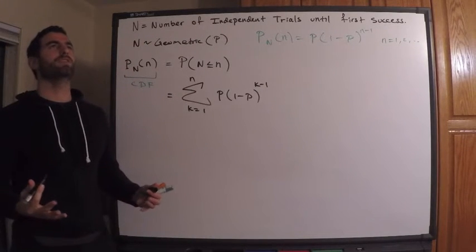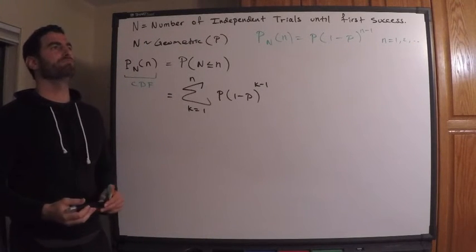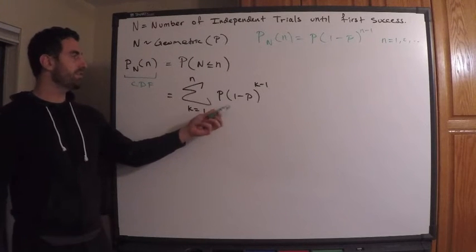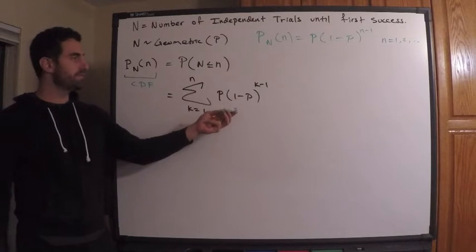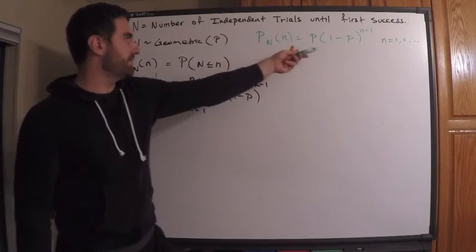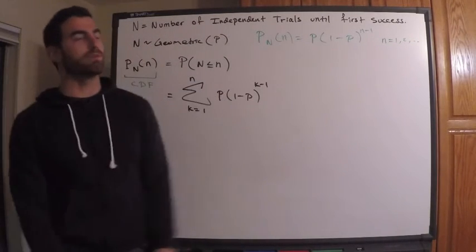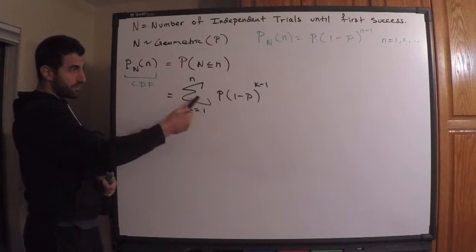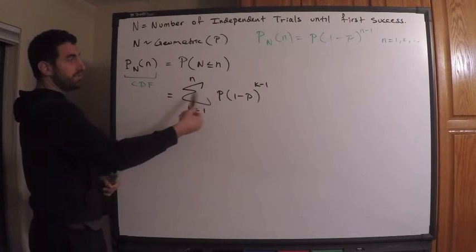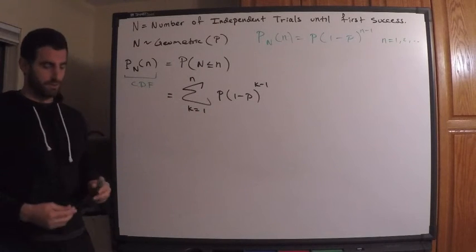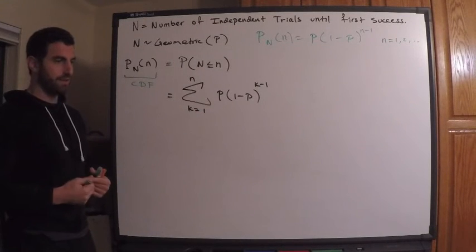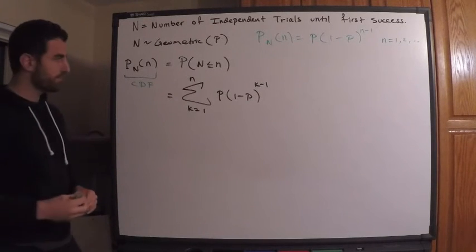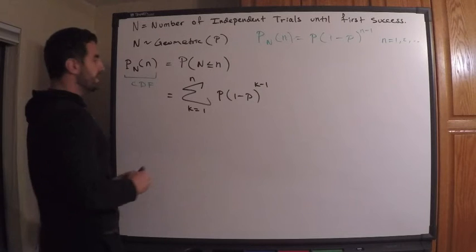Why on earth would this be called the geometric distribution? Because this is basically a geometric sum — you can think of this as a finite geometric series. I'm going to compute this using the formula for the sum of the first n terms of a geometric series.